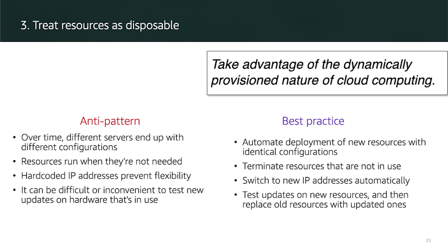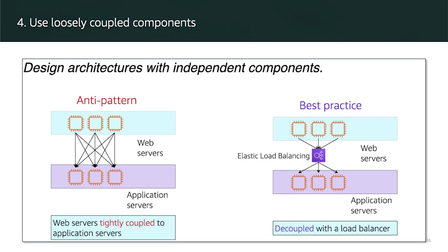Traditional infrastructure has chains of tightly integrated servers, each with a specific purpose. When one of these components or layers goes down, the disruption to the system can be severe, and scaling is very difficult. If one application server goes down, the tightly coupled web server will also go down, requiring you to fix and maintain both. With loose coupling, you can use a managed solution such as a load balancer between the application and web layer, allowing you to replace unhealthy instances with healthy ones without affecting the performance of your web server.